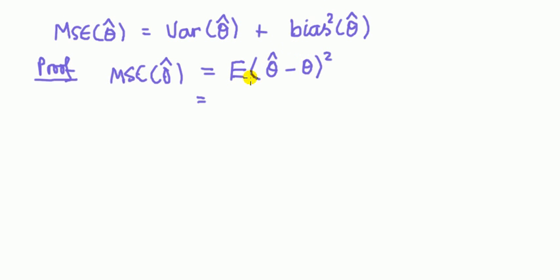I'm going to do this directly. The idea here is to expand the brackets using the definition of MSE, expand the brackets, take expectation through, and then tidy it up knowing the definition of variance of theta hat and the definition of bias.